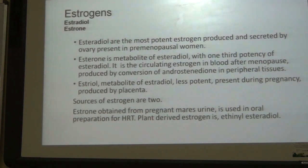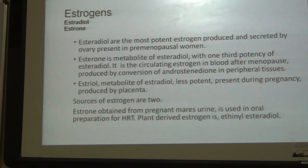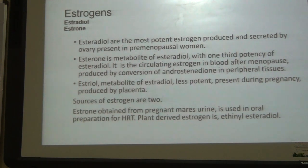Estradiol is the most important estrogen, produced and secreted by the ovary, present in premenopausal women. Estrone is a metabolite of estradiol with one-third potency; it is the circulating estrogen in blood after menopause and is produced by conversion of androstenedione in adipose tissue. Another estrogen is estriol, which is significantly less potent than estradiol and is present during pregnancy as it is produced by the placenta.